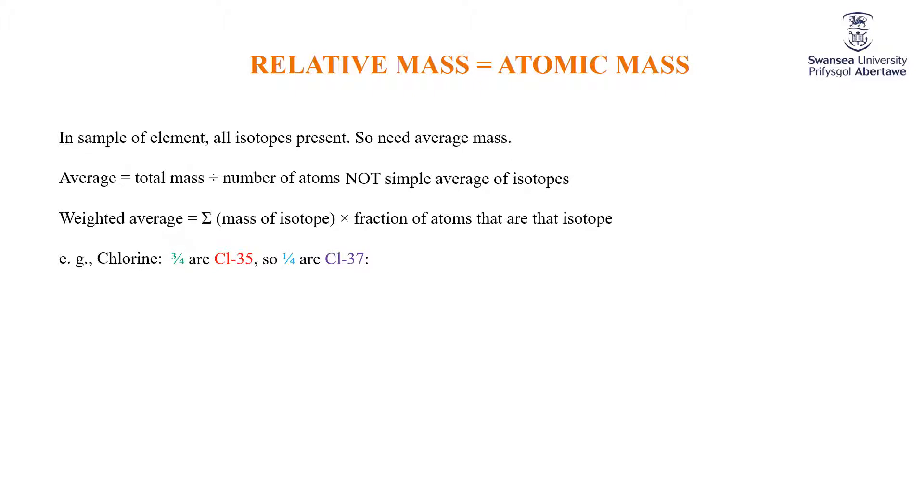So for chlorine, I'm going to tell you that three quarters are chlorine-35, which means a quarter are chlorine-37. So the weighted average or the atomic mass or the relative mass will be 35 times 0.75 plus 37 times 0.25. Going back to this, right? This sum sign, this big sigma, tells you you're adding them up.